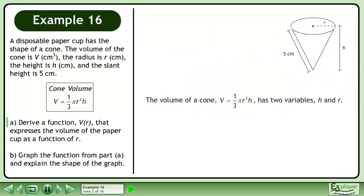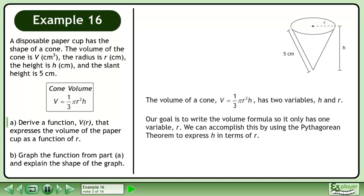The volume of a cone, V equals 1 over 3 pi r squared h, has two variables, h and r. Our goal is to write the volume formula so it only has one variable, r. We can accomplish this by using the Pythagorean theorem to express h in terms of r.